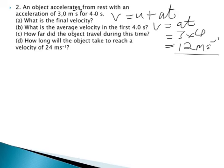B. What is the average velocity in the first four seconds? Well, you're really just averaging two numbers. This is the initial velocity, 0, and the final velocity, 12. So the average velocity V_AV would be U plus V over 2, the average of two numbers. And in this case, we get 12 divided by 2 is 6 metres per second.